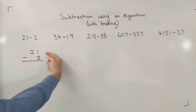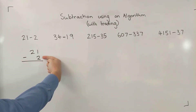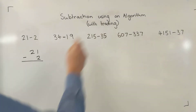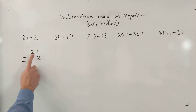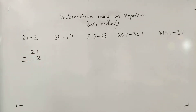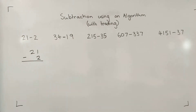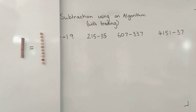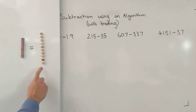Starting with the ones column, I take away from the bigger number. So 1 take away 2 — I can't do that. So this is where the trading comes in. I need to take one from my tens column over to my ones column so that I can do this subtraction. This trading is just like trading a long from my tens column into 10 ones.